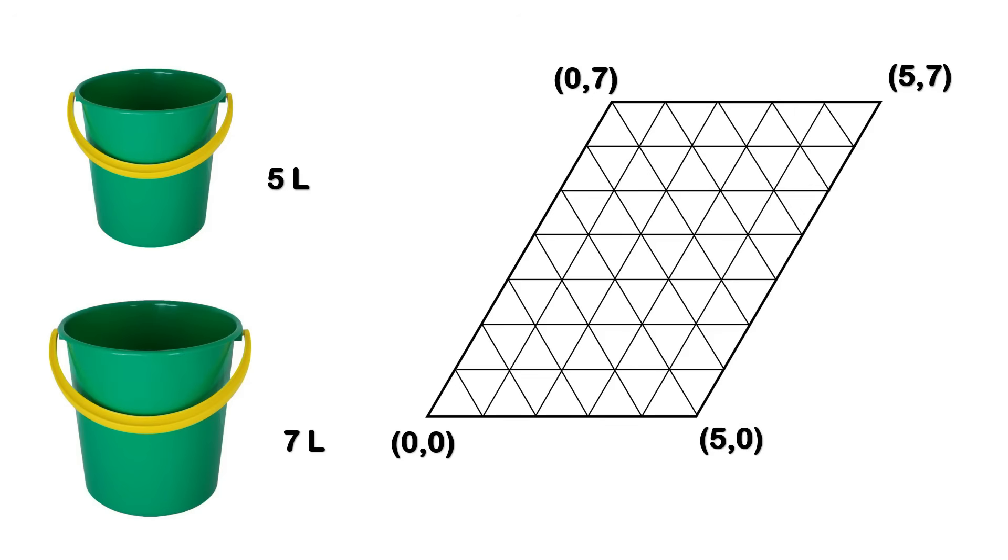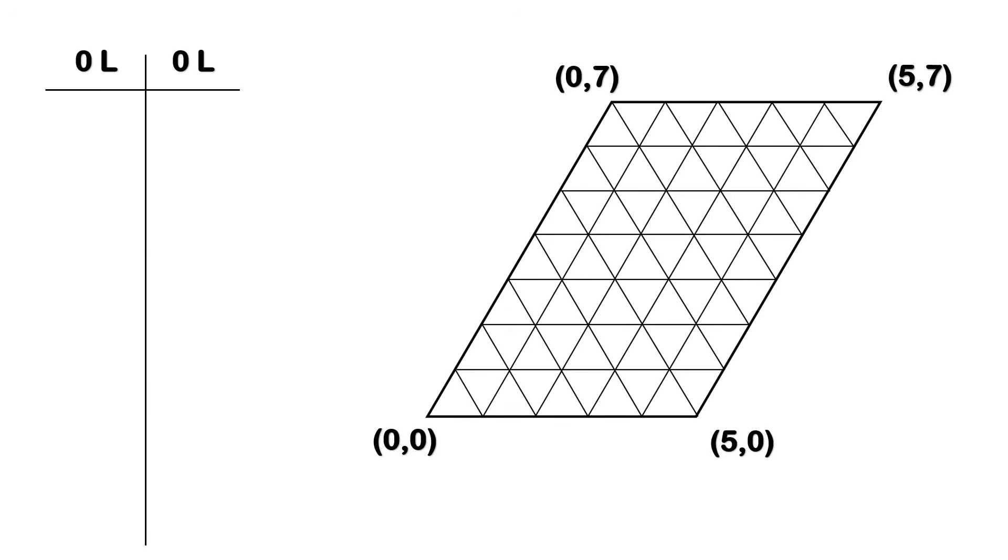We label these corners as (0,0), (5,0), (0,7), and (5,7). Now the real game begins. What's our goal? Our goal is to start from the point (0,0) and, using vectors and allowed movements, reach the point (0,6).